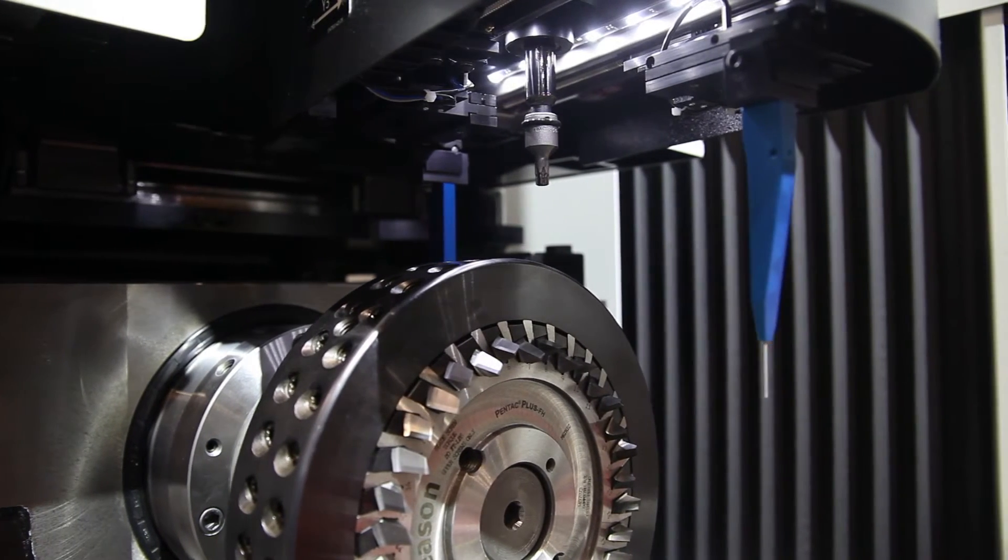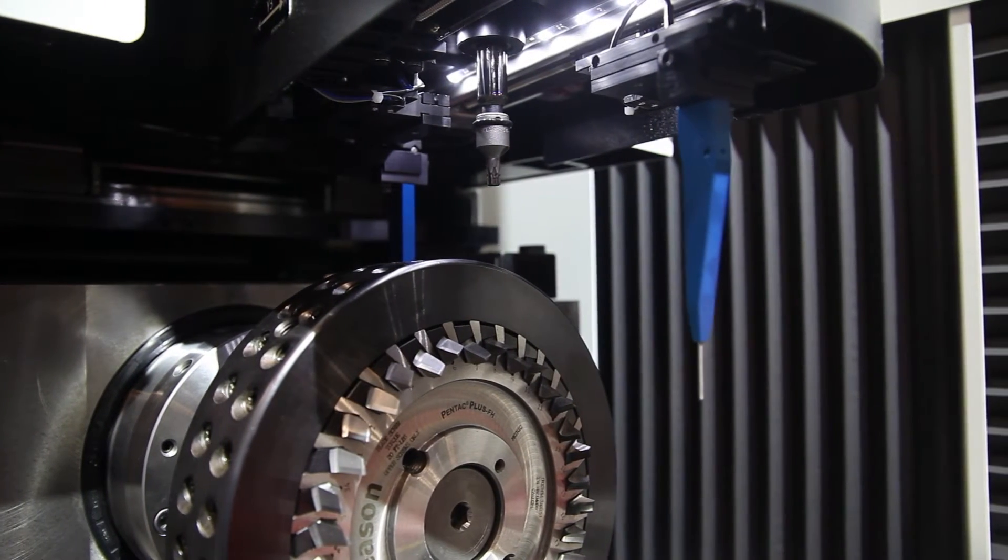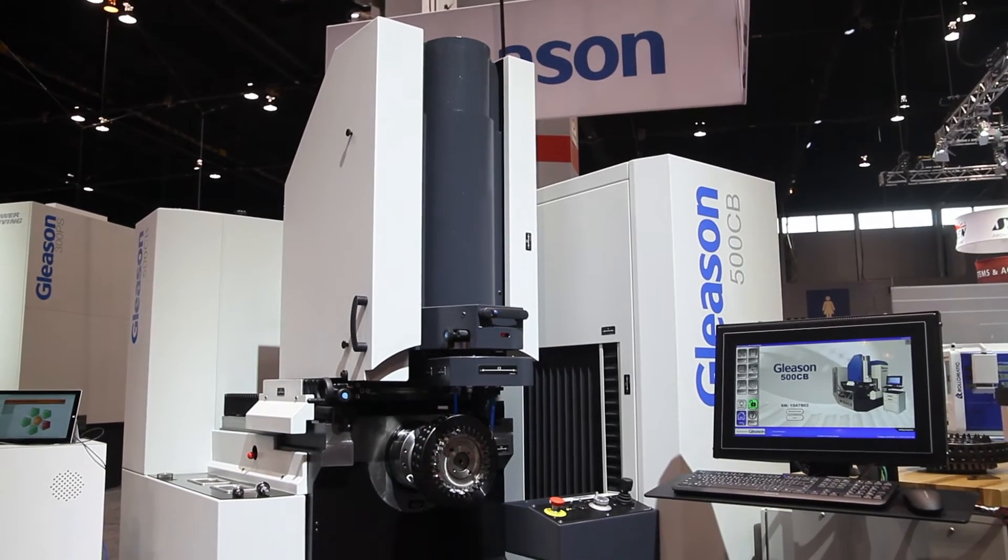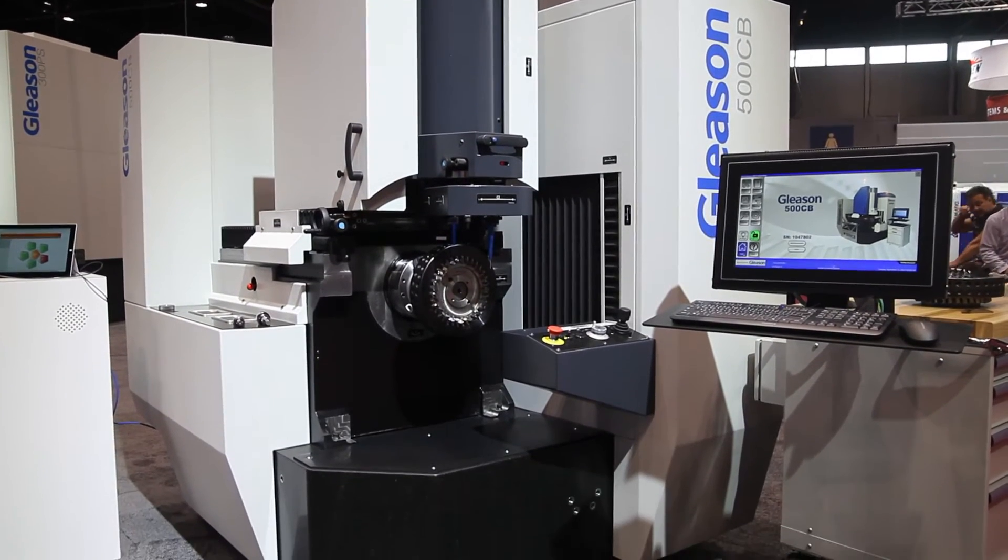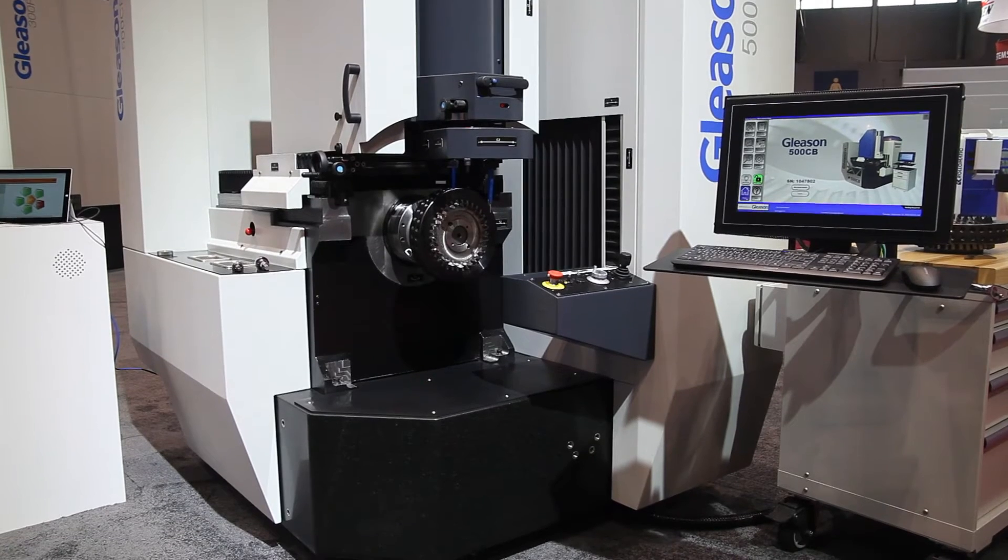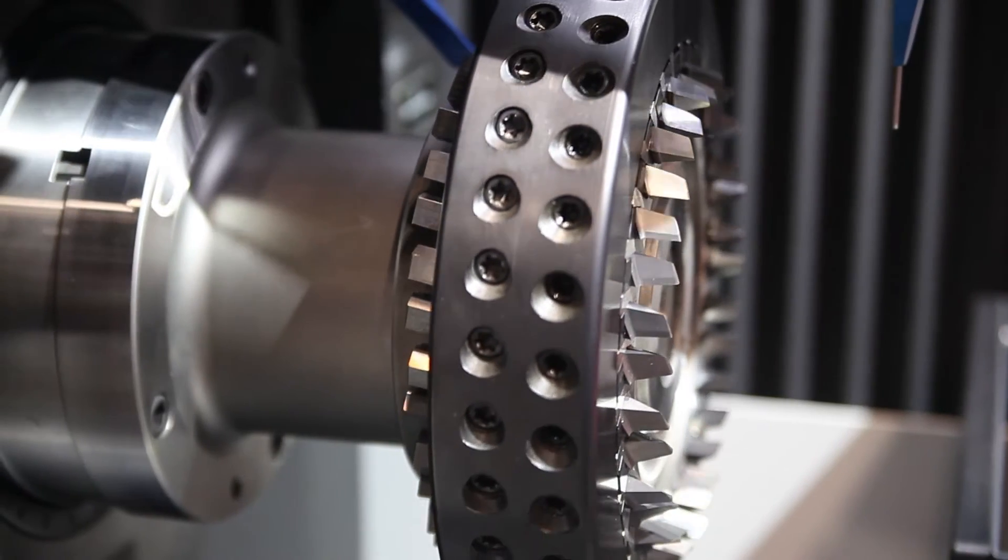We're here at IMTS to introduce the newest machine in our bevel product line, the 500CB. The 500CB is utilized to build bevel cutter heads, assembling the blades into the cutter head with great precision.